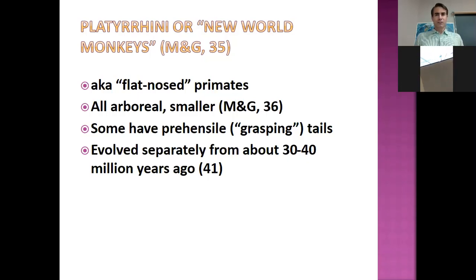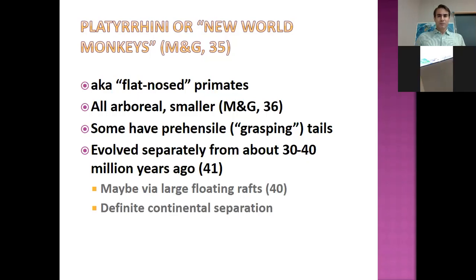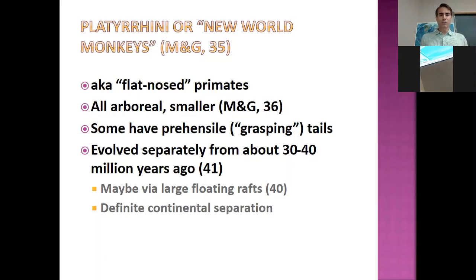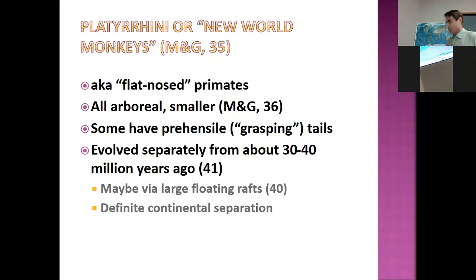New World monkeys began evolving separately from Old World monkeys at about 30 to 40 million years ago — a great long time even in evolutionary terms. Muckle and Gonzalez speculate about how the New World monkeys got to the Americas from Africa. One idea is that large accumulations of branches and earth would group up at the end of a river and float across the water. It's also probable that Africa and South America were not as far apart as they are now. What we do know is that the Old World and New World monkeys were separated continentally and stopped interbreeding.